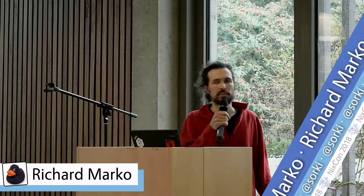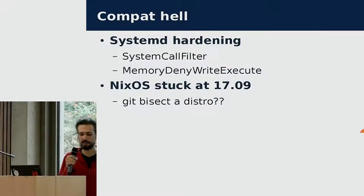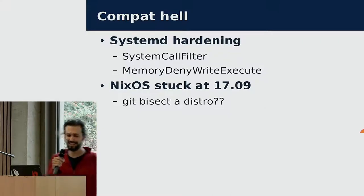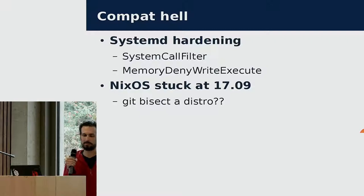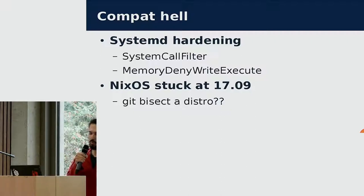Another issue is we're starting to hit limits with this old kernel — some distributions started to be problematic to upgrade because of system hardening. For example, we had to remove things like seccomp filters or memory write-execute, so that distributions can still boot and work. Also, NixOS on our production nodes is stuck on 17.09, because of systemd and udev as well. One cool thing while debugging this: with NixOS you can actually get a live running system to bisect commits, which is quite useful for finding what breaks things.